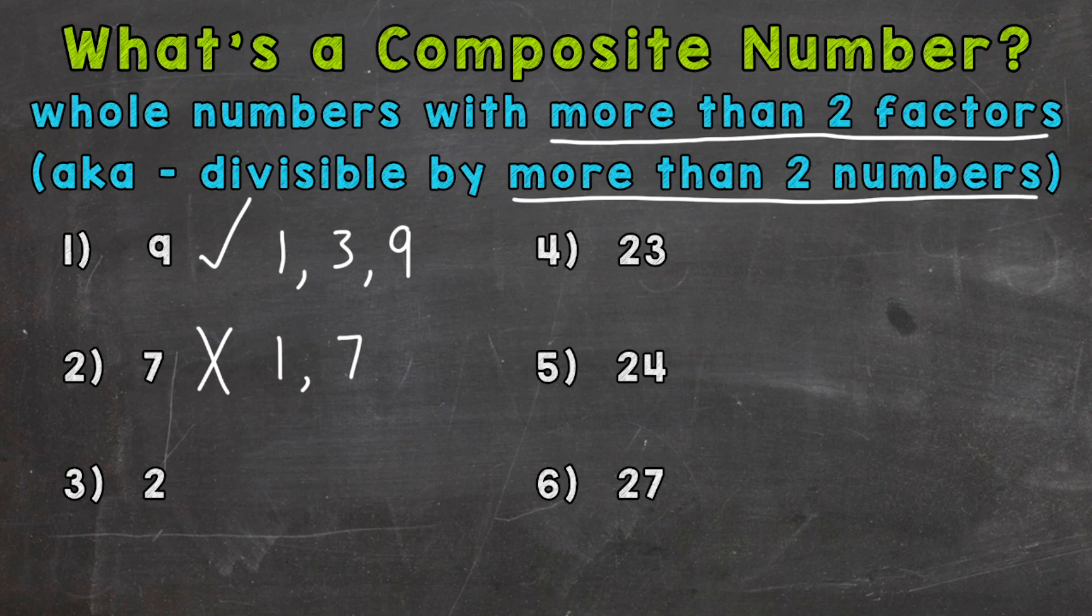On to number three, where we have two. Two is a unique number, and we'll find out why in a second. The factors of two: one times two equals two, and there aren't any other factors of two. So one and two are the factors of two. Two only has two factors, so two is prime, just like seven. But two is unique because it's the only even number that is prime. All other even numbers are automatically composite because we have the factors of one and the number itself, and then two is an automatic factor of all the other even numbers.